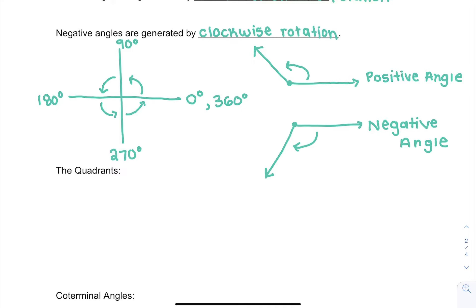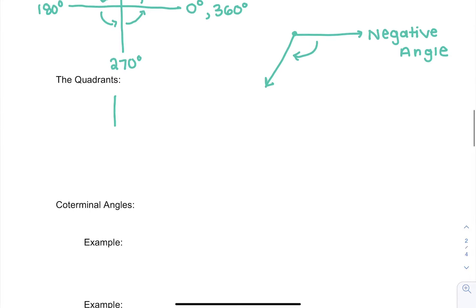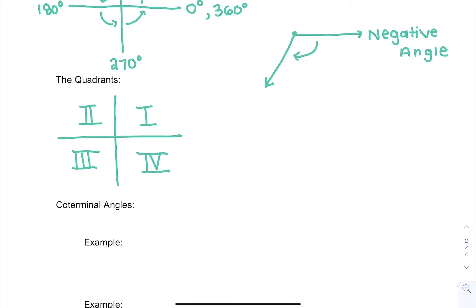Before we start talking about different angles we can generate, we want to make sure we know what the four quadrants are. On a graph, here's quadrant one, here's quadrant two, here's quadrant three, and here's quadrant four. Notice they're labeled by going counterclockwise — one, two, three, four in a counterclockwise direction, which corresponds to a positive angle.